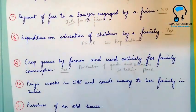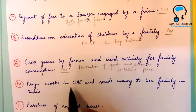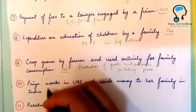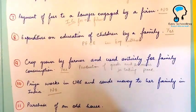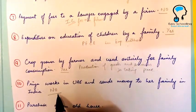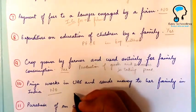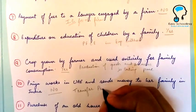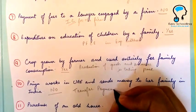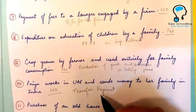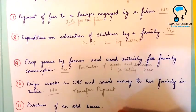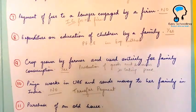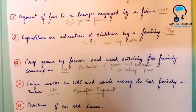Then, Priya works in UAE and sends money to her family in India. No, this will not be a part of national income. This is a transfer payment — it is a sort of gift that Priya's family is receiving from her; they don't have to offer any goods or services in return.